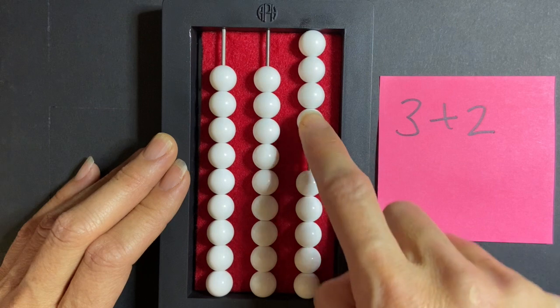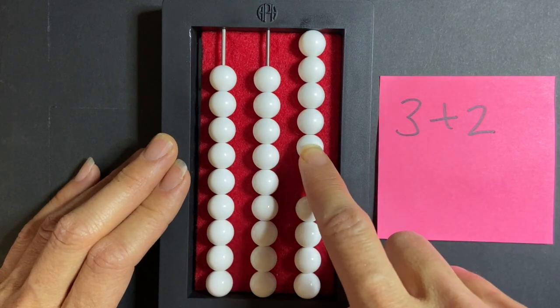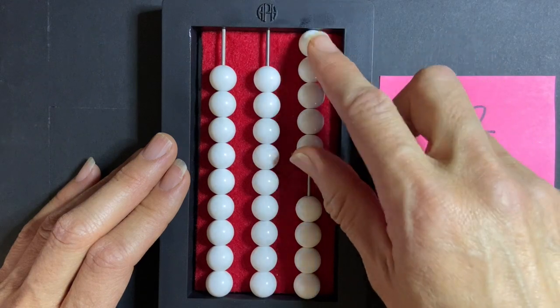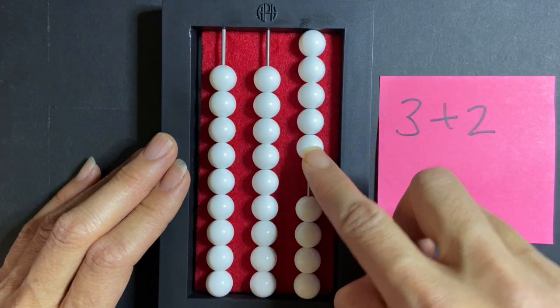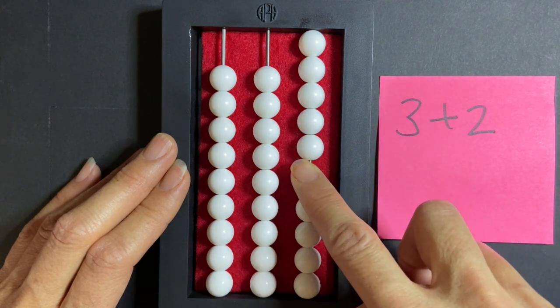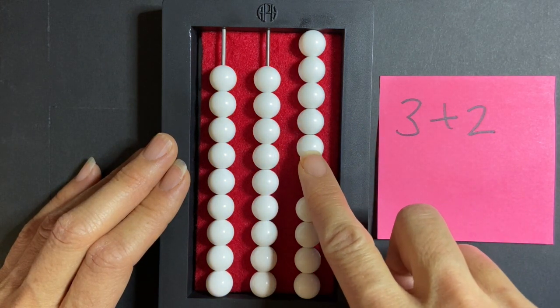Now I can count how many beads I have here pushed up to the counting bar: one, two, three, four, five. So I get my answer, which is 5.